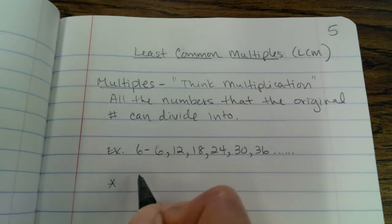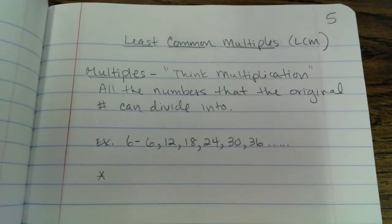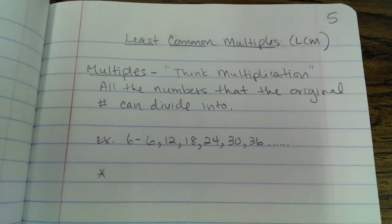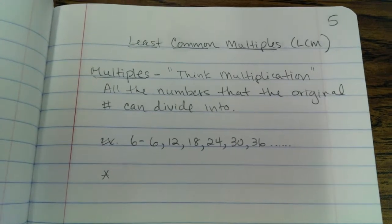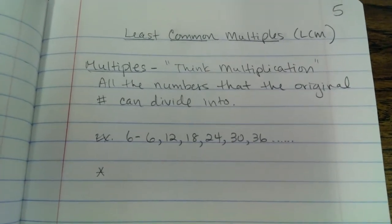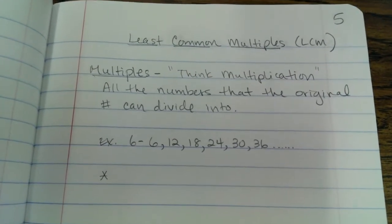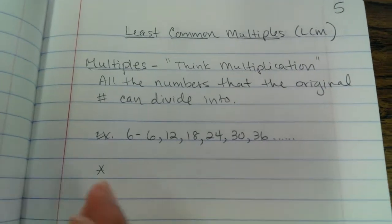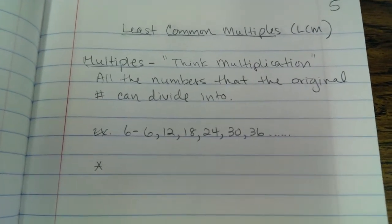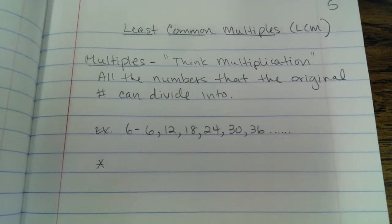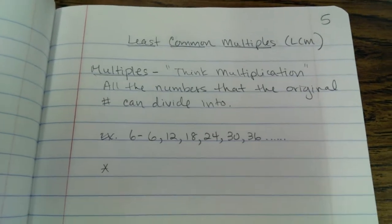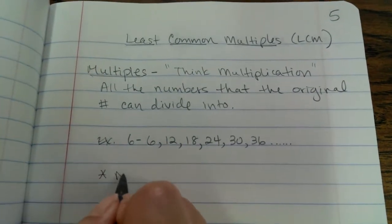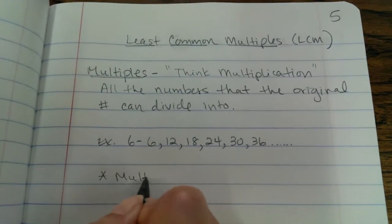You need to remember that factors, unlike multiples, are not infinite. We only have a limited amount of factors — that's why we do the U method. When we're done finding the factors we put the U around it. But for multiples, if I asked you to list all the multiples of 6, you would be listing them forever. So multiples are infinite.